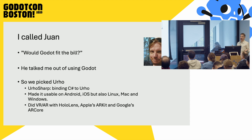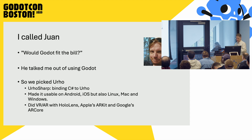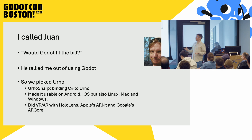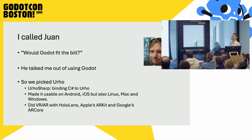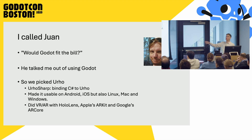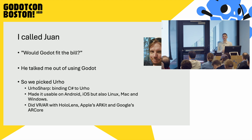So I said, all right, I'll just use Urho. That tells you what kind of person Juan is — basically: use it if it works, otherwise go away. So we spent a lot of time making Urho Sharp, binding C-sharp and Urho together, and we made it work on every platform under the sun. We also thought that VR was the future, so we made it work on HoloLens, Apple's ARKit, and Google's ARCore.